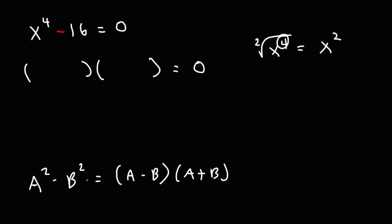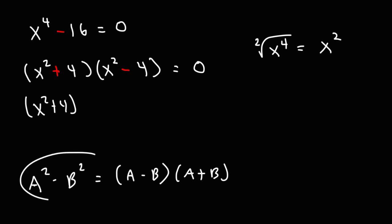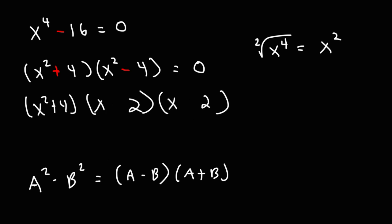You basically divide the exponent by 2, so our a value is x squared. To find our b value, we need to take the square root of 16, which is 4. So we get (x squared plus 4)(x squared minus 4). Now we could factor x squared minus 4 using this same process again. The square root of x squared is x, and the square root of 4 is 2, giving us (x plus 2)(x minus 2).